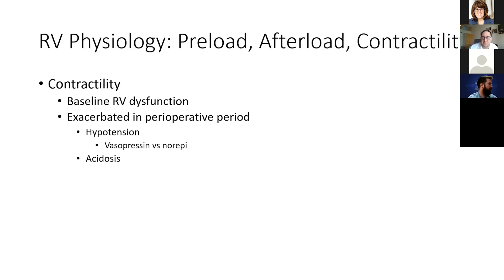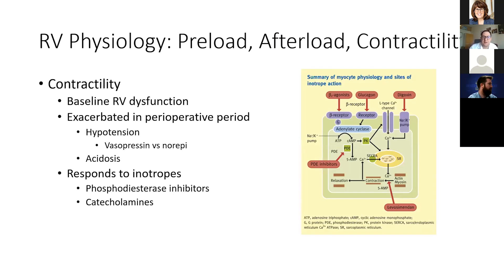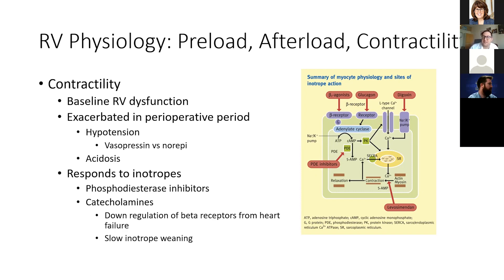Acidosis exacerbates RV dysfunction in the perioperative period by reducing affinity for catecholamines. The RV does respond to inotropes — we use phosphodiesterase inhibitors and catecholamines, which work through different pathways and can be synergistic. An important comment about catecholamines: patients with longstanding heart failure have downregulation of their beta receptors, making them very sensitive to catecholamine weaning. I wean very slowly — taking dobutamine from 3 down to 2.5, maybe 2 at most — because these right ventricles can be very sensitive to catecholamine weaning.